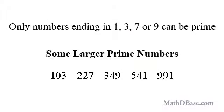It is interesting to note that 2 is the only even prime number. Numbers that end in 5, such as 15 and 45, are divisible by 5, and those ending in 0 are divisible by 10, which means that they are also divisible by 2 and 5. Generally, only numbers that end in 1, 3, 7, or 9 can be prime.